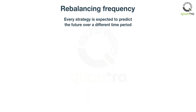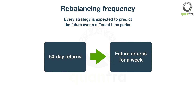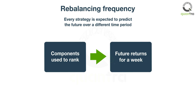Every strategy is expected to predict the future over a different time period. In the above strategy, we are working with 50-day returns to predict returns over a week. Based on the components used to rank the currency pairs, you can determine the time period over which the strategy will predict future returns, and then determine the rebalancing frequency.